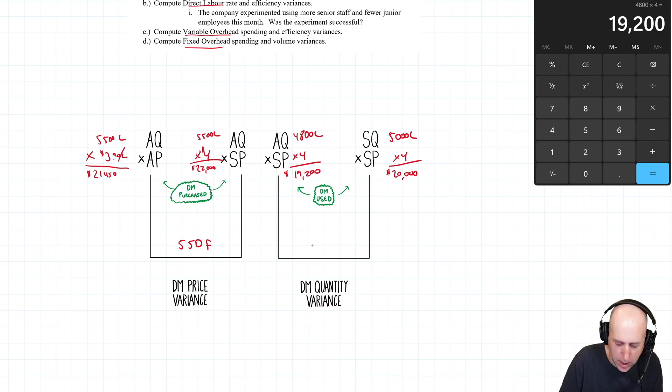The difference here is 800. Now is this favorable or unfavorable? Compare what's different between the two. The 4 is the same, so it's 5,000 versus 4,800. I'm supposed to use or expect to use 5,000 liters of chemicals to yield the units I got. I only used 4,800. This is good, this is a savings, this is favorable. So overall, I am $1,350 favorable for my overall materials variances, and you can see how that breaks down.